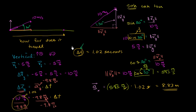In the last video, to figure out how long it's in the air, we said: we're starting and stopping at the same elevation. Whatever our vertical velocity is upward at launch, we're going to have the same magnitude of velocity but directed downward at landing. We used that insight to figure out the change in velocity, and then used that change in velocity and the constant acceleration due to gravity to figure out the time in the air. And it was pretty simple mathematically.